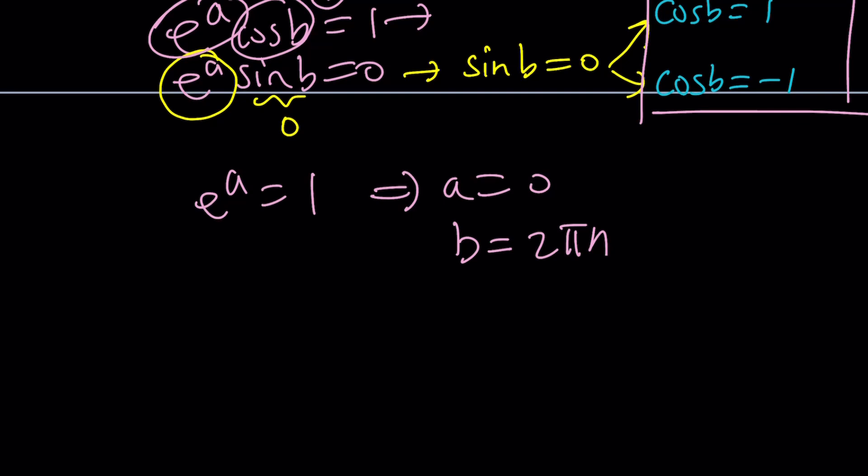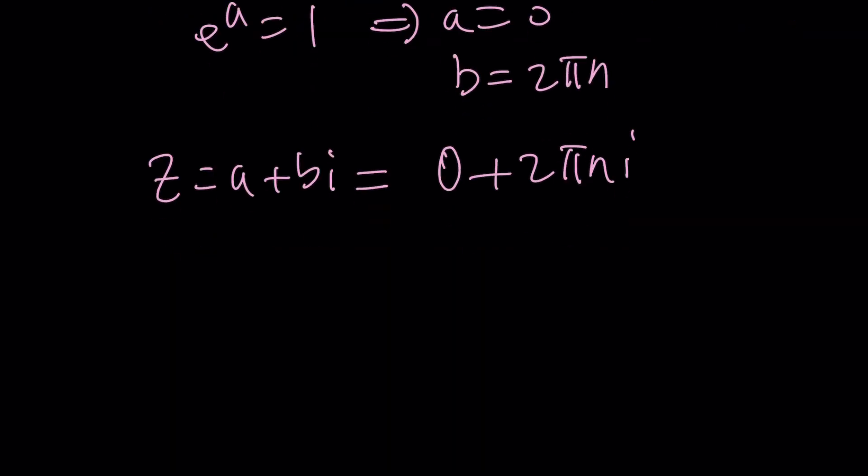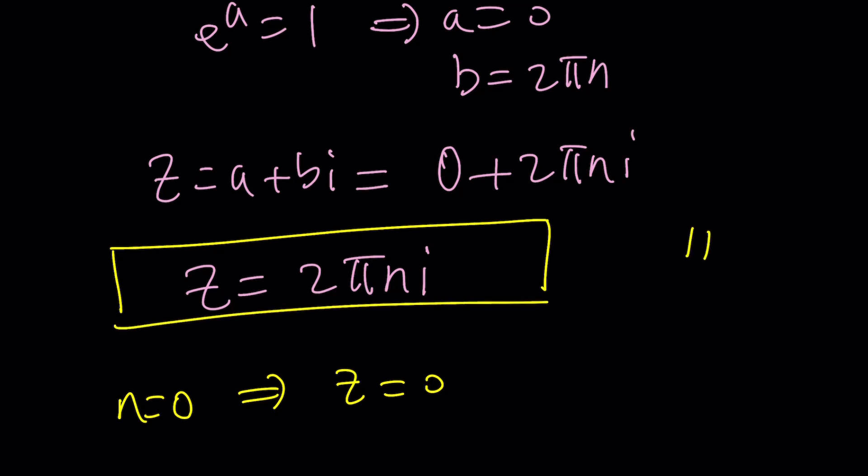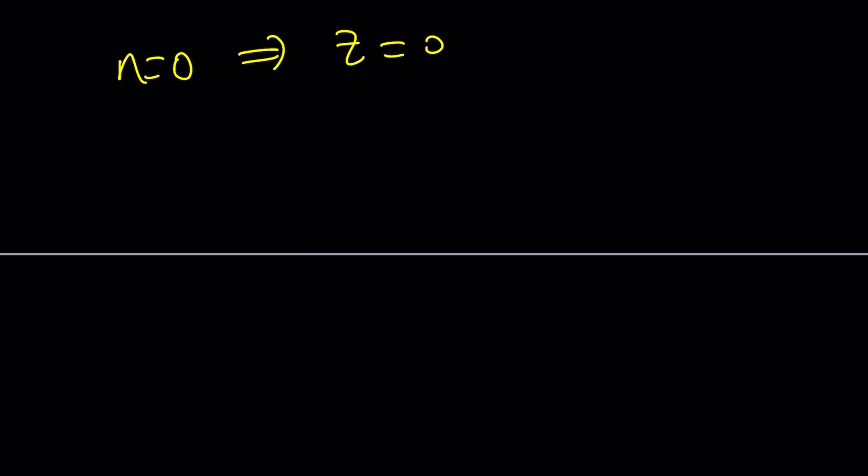So when we put it together, let's find out what's going to happen. Z equals A plus B I. So now we can write our Z as zero plus two pi n I, which means Z equals two pi n I. And of course, when N is equal to zero, Z is equal to zero, which is one of the obvious solutions. And this doesn't bring us to the end of the video because we still have to talk about the second method. But I promise, it's going to be very quick.